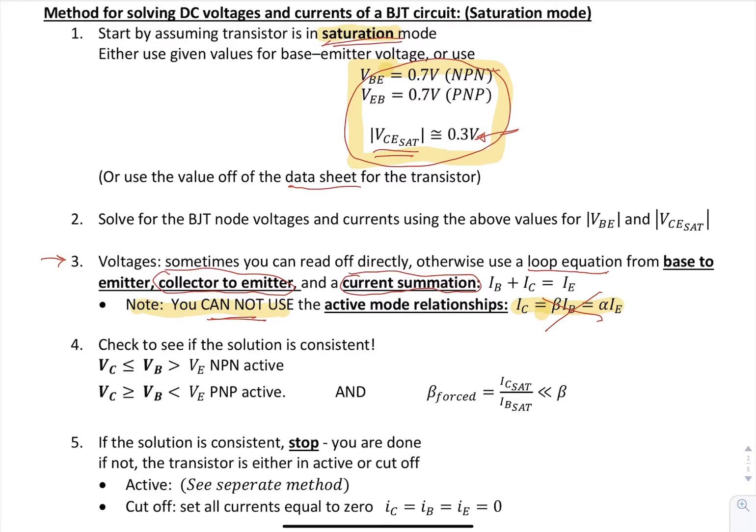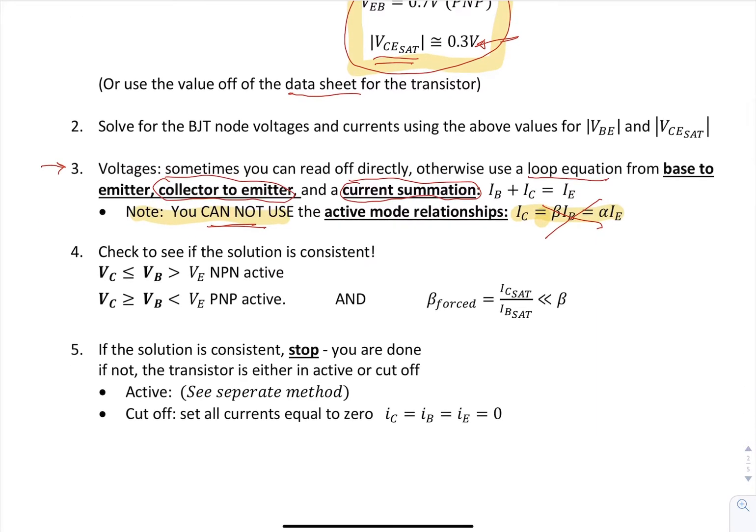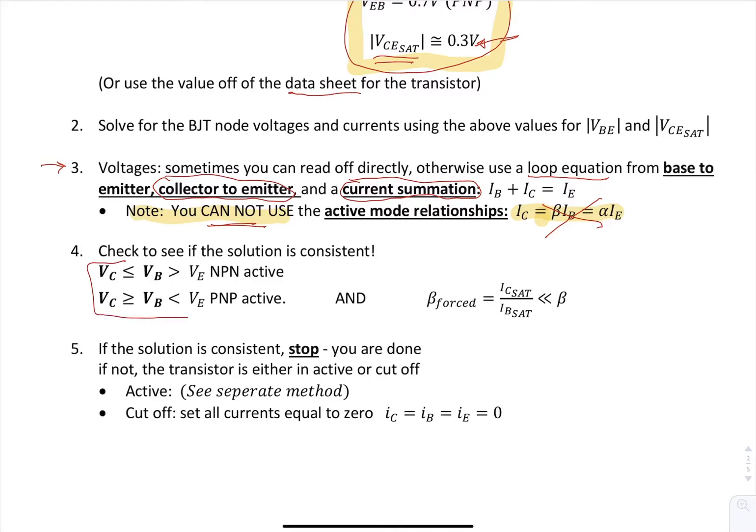For all of these modes, you're going to assume the mode, solve the circuit, and then test the conditions to see if it's satisfied. If so, then you are done. The solution is consistent. For a saturation condition, that's going to be these conditions. You have two conditions. One is that your voltage at your collector is less than or equal to VBE. Remember equals is the threshold. And that's when you're in an NPN. And for the PNP, it's opposite.